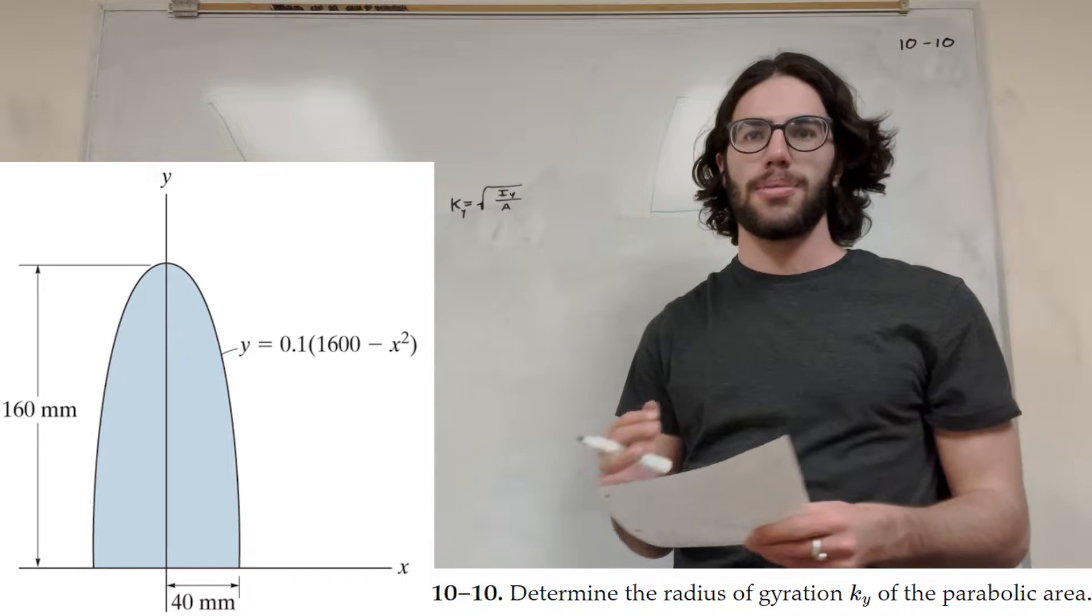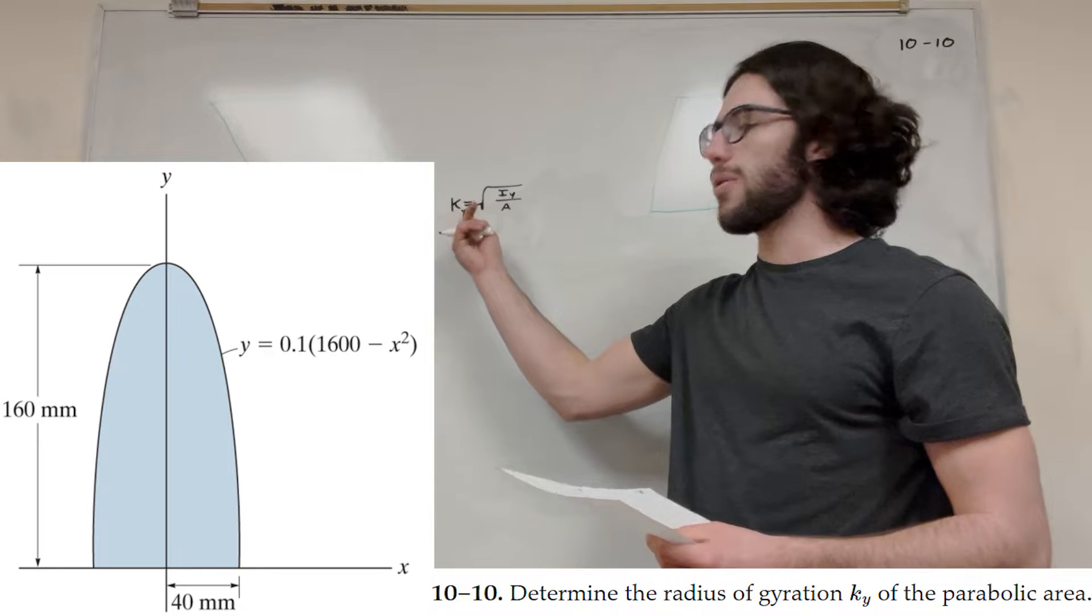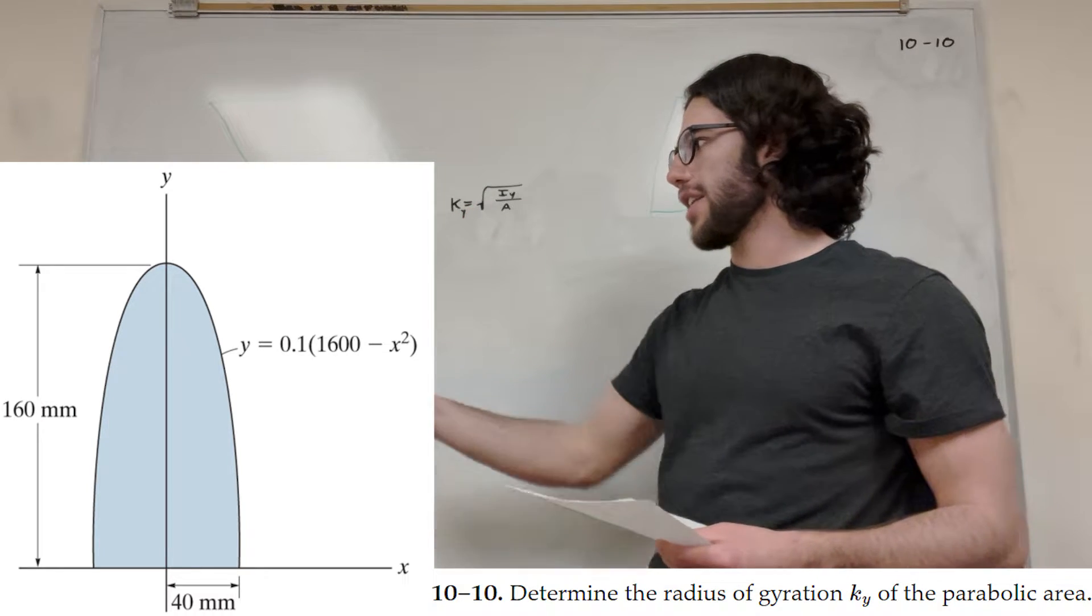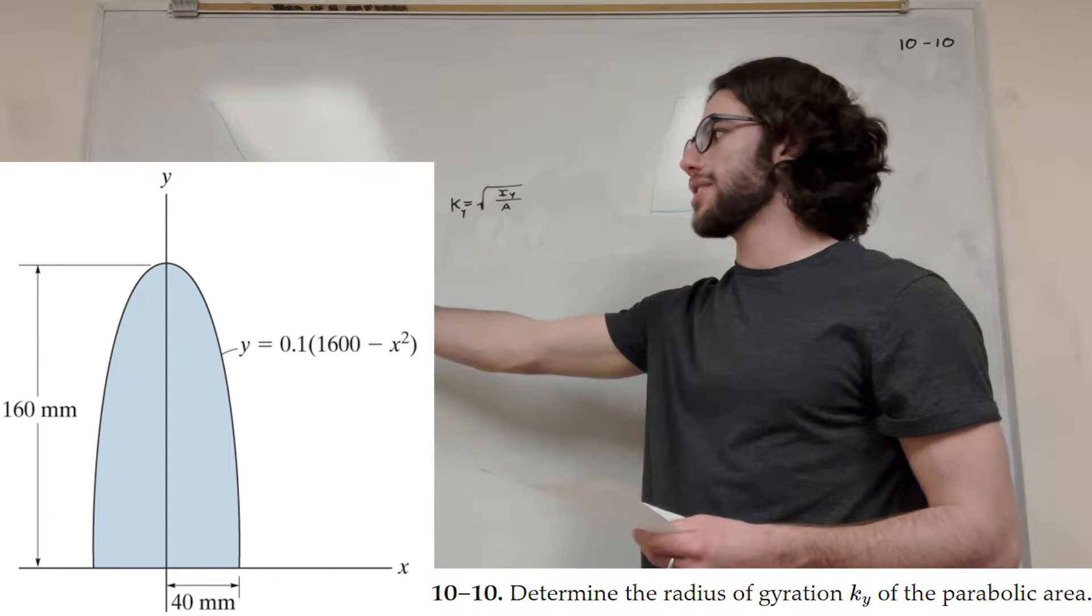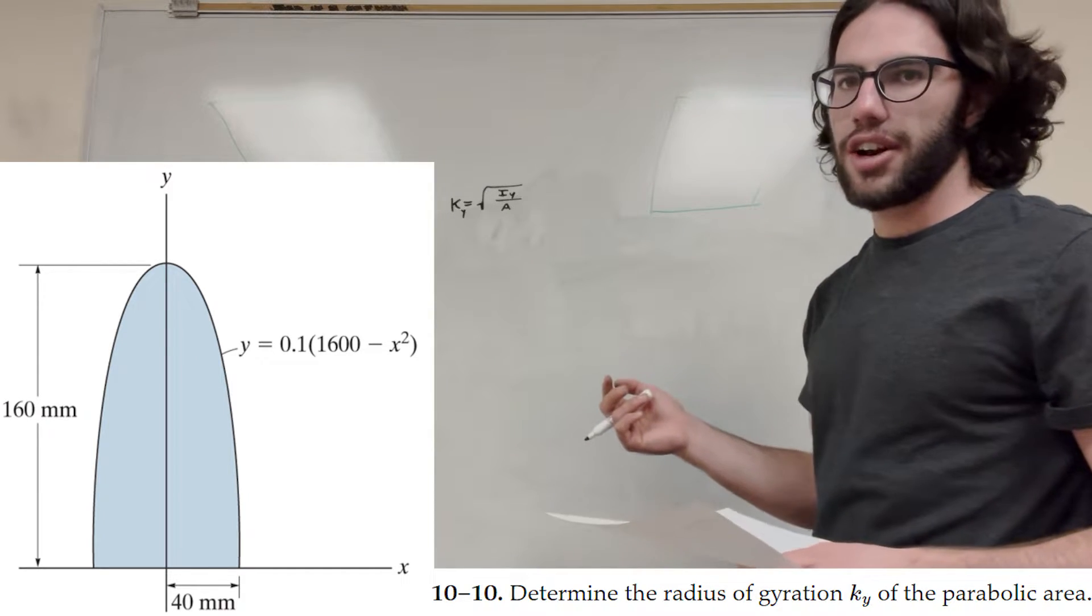What's up, Cal gang? So we got a statics problem today. The goal is to find the radius of gyration, k of y, of this shaded area. So this area is defined by y equals 0.1 times 1600 minus x squared. So let's go ahead and get started.